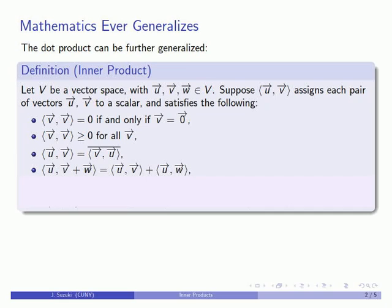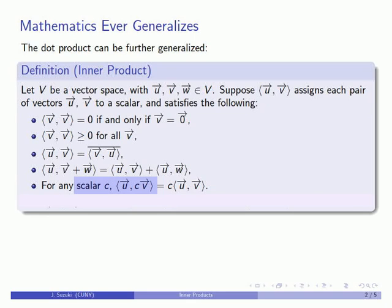Note that this only applies to the sum of the vectors in the second position. And, of course, we want to deal with scalar multiplication, so for any scalar c, the inner product of u with a scalar multiple of the second vector should be the product of the scalar with the inner product of the two vectors.